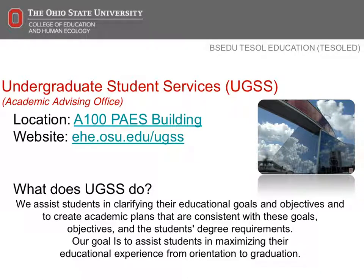The Office of Undergraduate Student Services, or UGSS for short, is located in A100 Pays Building. The role of UGSS is to assist students on their educational journey from orientation to graduation. Academic advisors are here and ready to assist you.